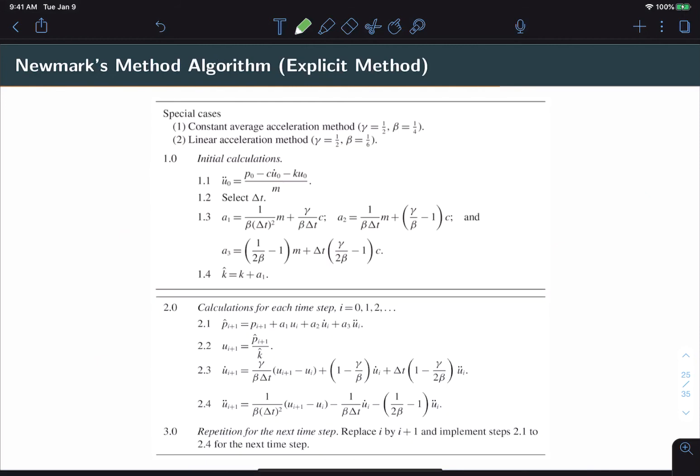The final algorithm makes all of that explicit. Here you have initial calculations, which calculate your initial acceleration, then the values for each of these coefficients a1 through a3. Notice that these are in terms of beta, gamma, delta t, and our system parameters m, c, and k. So these are actually constant values. Then we also calculate our k hat.